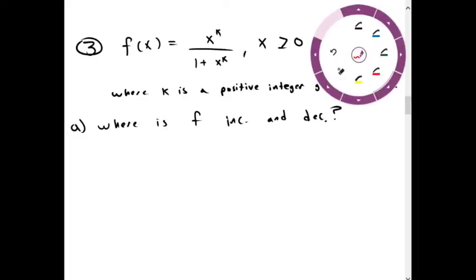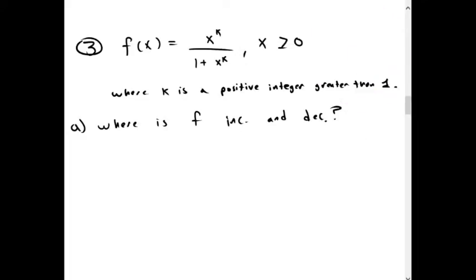For our third example, we have f of x equals x to the k over 1 plus x to the k with x greater than or equal to zero, where k is a positive integer greater than 1.